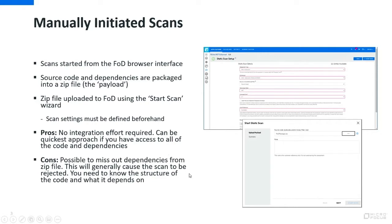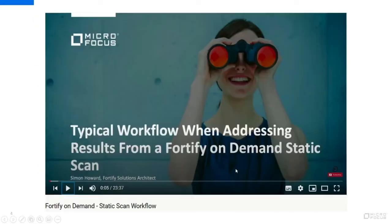The pros of taking this approach is there's no integration effort required at all, and it can be the quickest way for you to perform a scan if you have access to all of the code and dependencies. A con is that it's quite possible you might miss out the dependencies from the zip file if you don't know the structure of your code. If dependencies are missed, there's a good chance the scan will be rejected. There is a good video on YouTube that describes the process of performing a static code scan.